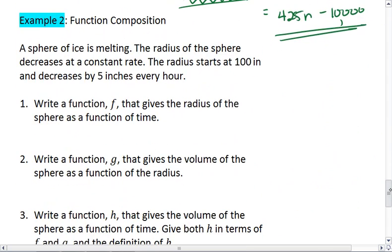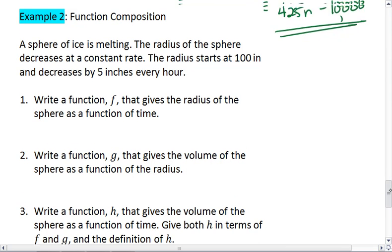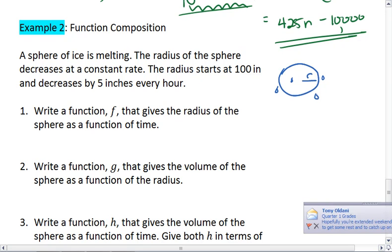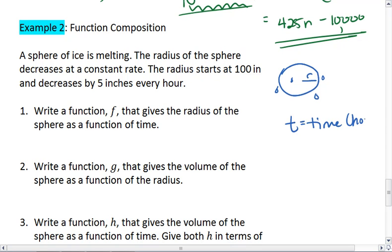Here's an example of function composition. We have a sphere of ice that is melting. The sphere decreases at a constant rate, or the radius of the sphere decreases at a constant rate. The radius starts at 100 inches and decreases by 5 inches every hour. So we already have t represents time in hours.